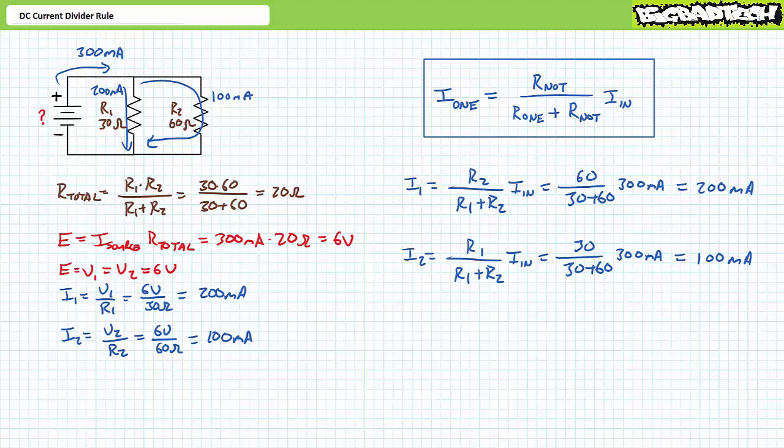If the DC current divider rule seems too easy, rest assured, there are ample opportunities to screw it up. First, stay organized. Which resistor are you interested in? Which resistor are you not interested in? Pick one and remember which one you picked. You'll note the choice of the resistor of interest only affects the numerator, i.e. the top portion of the ratio. The rest of the formula remains the same for both resistors. Additionally, realize the summation of the two resistors in the denominator needs to be enclosed in parentheses if you're foolish enough to try to enter this formula in your calculator in one go. My advice is to enter the formula into your calculator in stages.